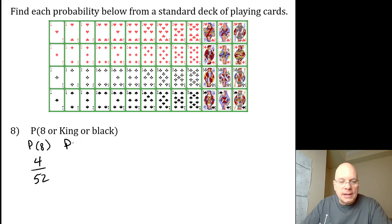The probability of a king, also four fifty-seconds, four kings, one in each suit. Probability of a black card, half the deck, or twenty-six fifty-seconds.